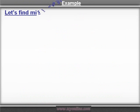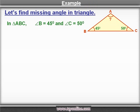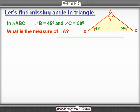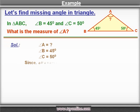Let's see an example of how to find the measure of a missing angle in a triangle. In triangle ABC, we are given the measure of angle B equals 45 degrees and the measure of angle C equals 50 degrees. Let's find out the measure of angle A. According to the angle sum property, the sum of the three angles in a triangle is 180 degrees, so angle A plus angle B plus angle C is equal to 180 degrees.